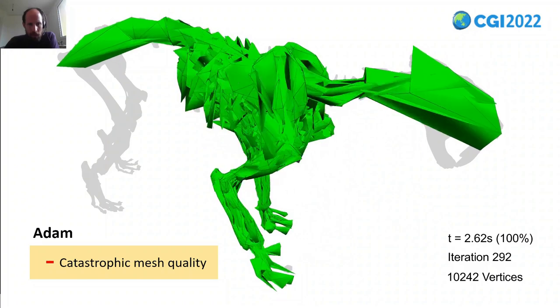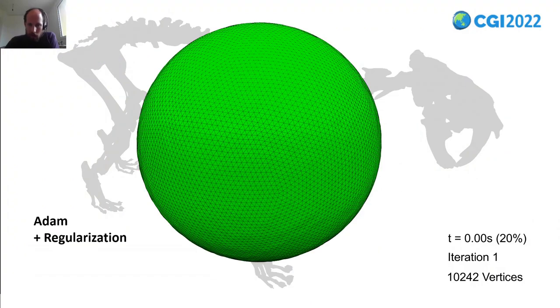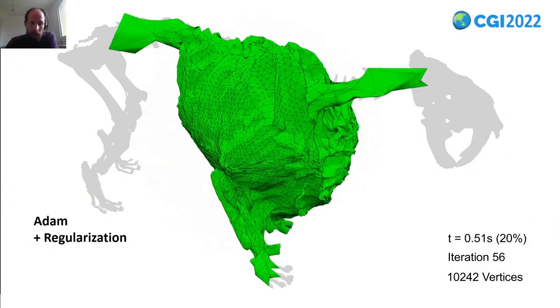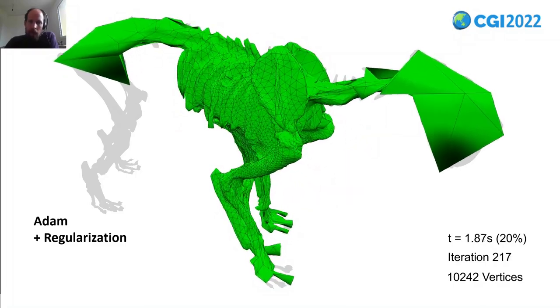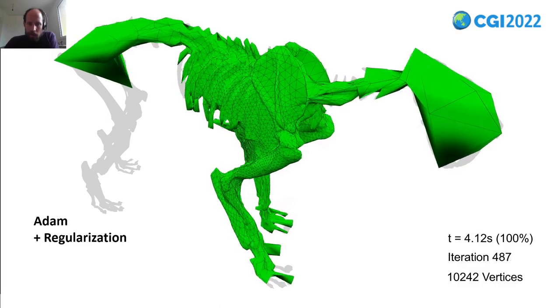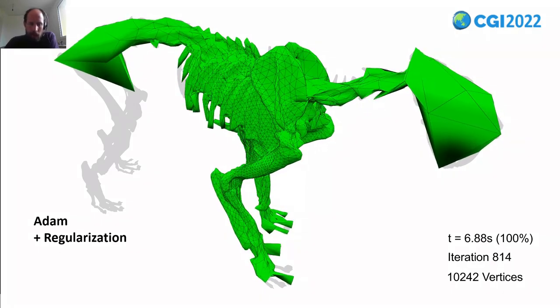A standard solution is to add a regularization term. Now we get much better results, but now we have a new problem. On the head and also on the hip, the triangles are quite large and we are not able to reconstruct more details.